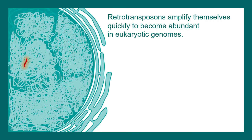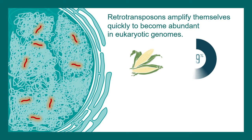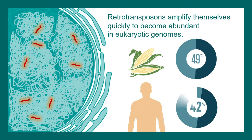Retrotransposons are pretty common. They can amplify themselves very quickly, which is why they are quite abundant in eukaryotic genomes. You would be surprised to see that in maize they comprise 49% of the genome, whereas in humans they are roughly about 42%.